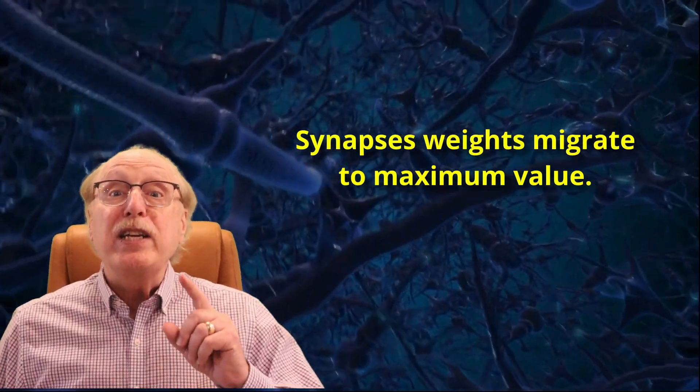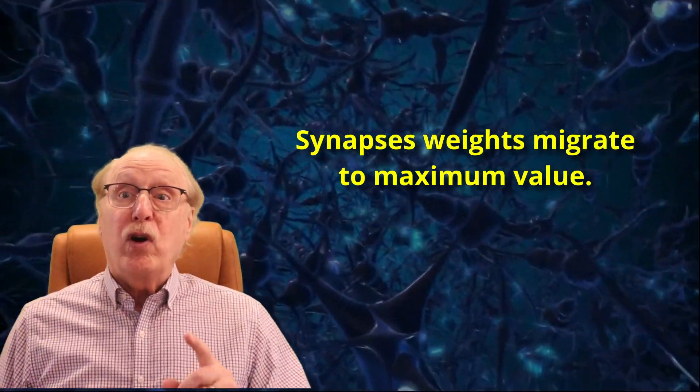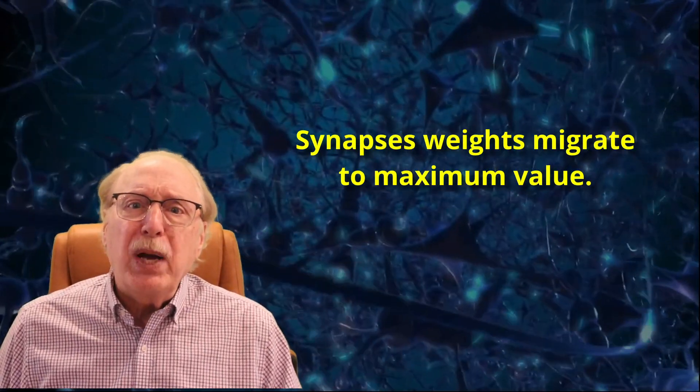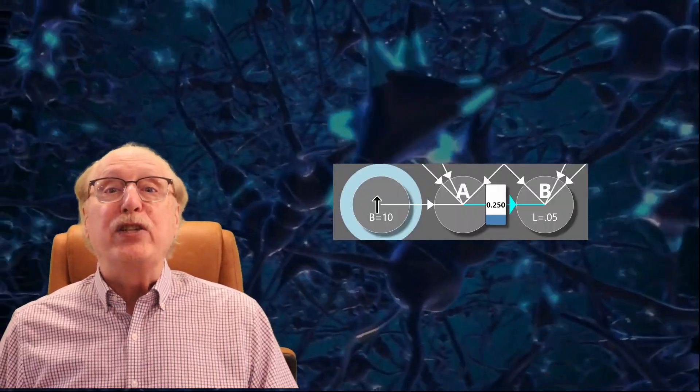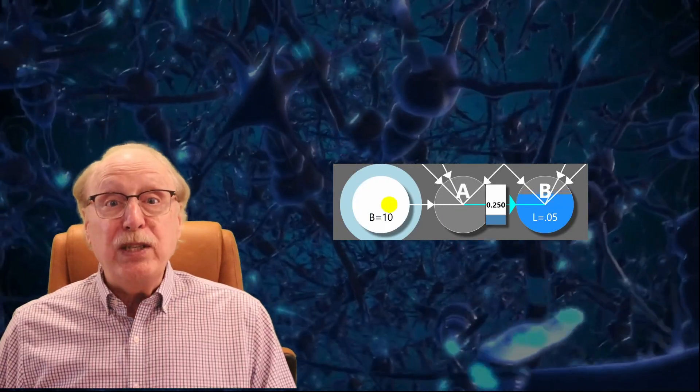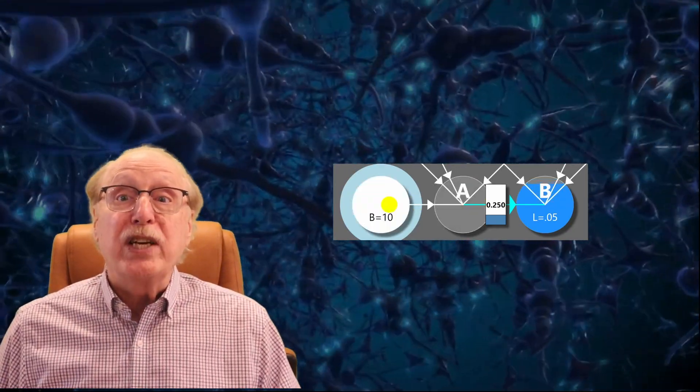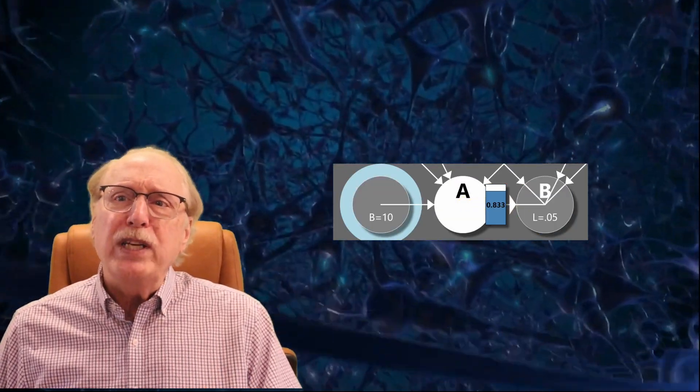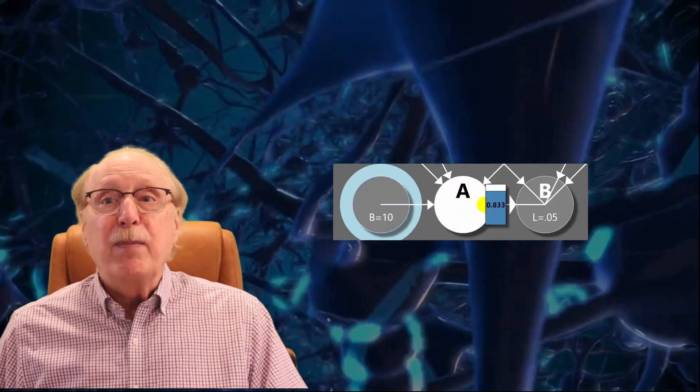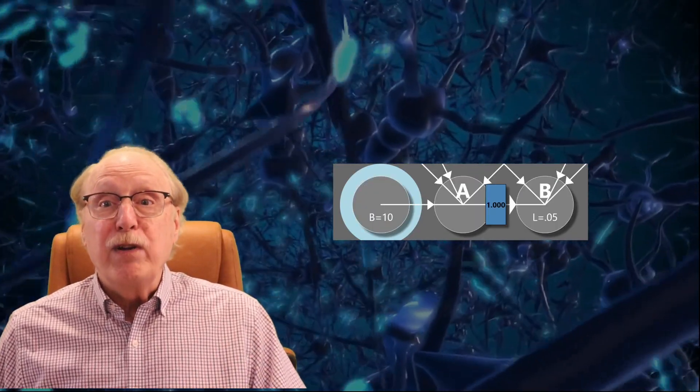If a synapse weight is ever great enough that neuron A could cause neuron B to fire, even if it takes multiple spikes, the synapse weight will rapidly reach its maximum value as shown here. This also means that your brain can only set a synapse weight to approach its minimum or maximum values. So although a synapse weight is often considered a real number, it can really only take on a very limited number of distinct values. The minimum, the maximum, and a few values in between.